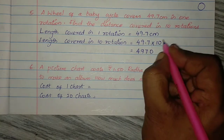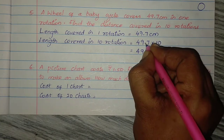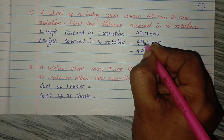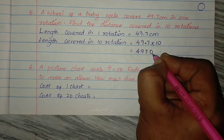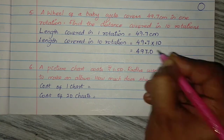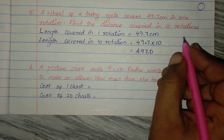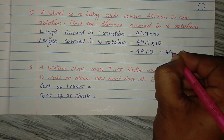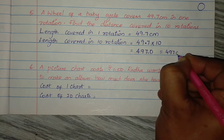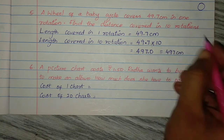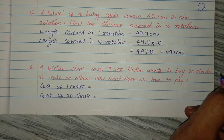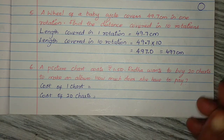49.7 into 10 = 4970. 1 digit after decimal, so place decimal 1 digit before. Answer: 497 cm. In 10 rotations, the wheel covers 497 cm.